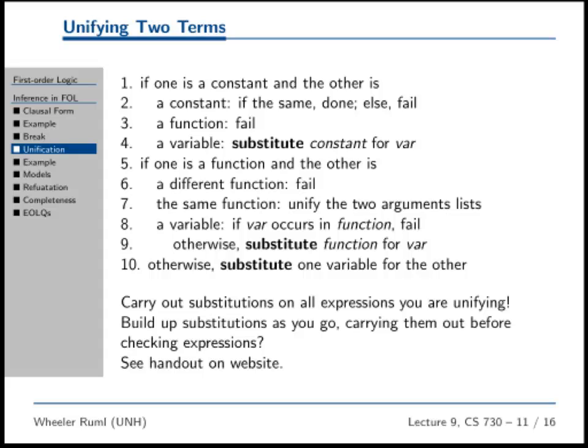The easy case is when one of the arguments is a constant and the other is also a constant. If they're the same constant, then life is good. If they're not, then fail, because you can't unify two constants together.